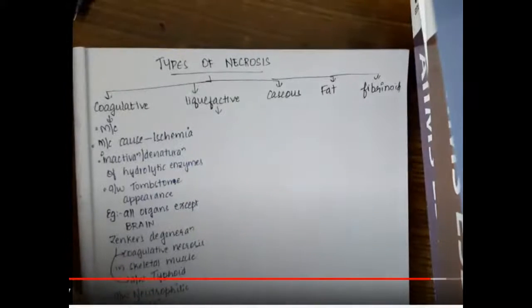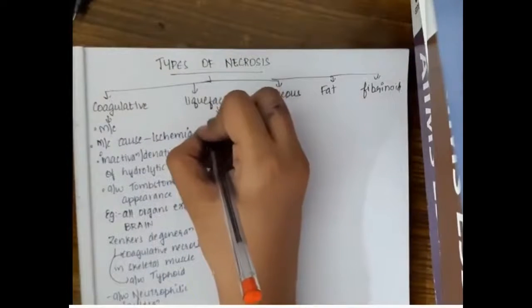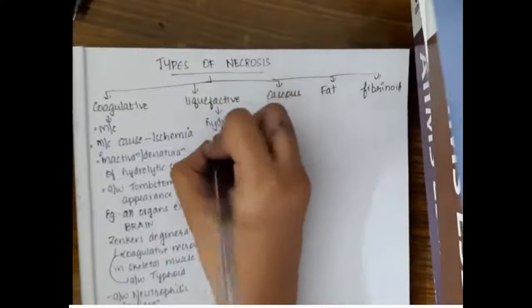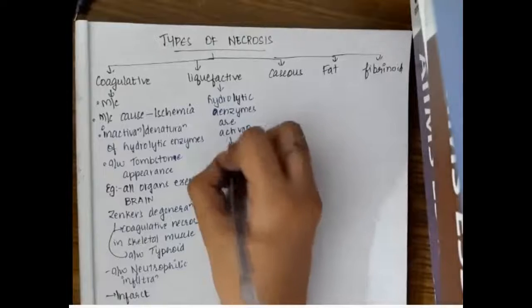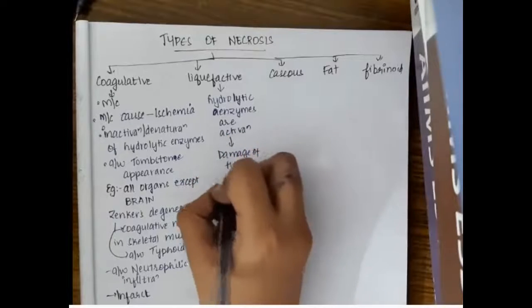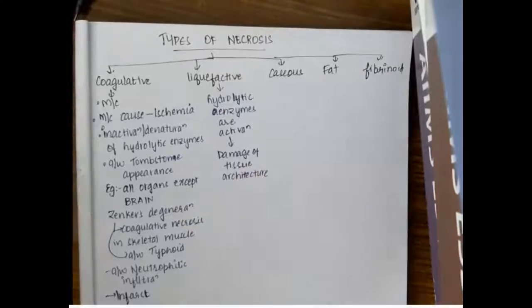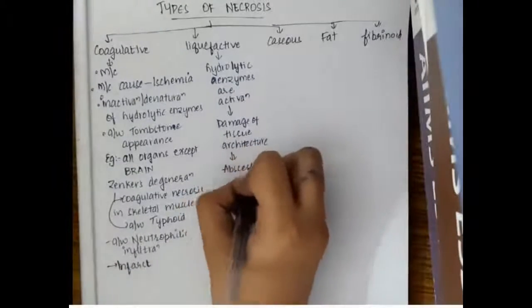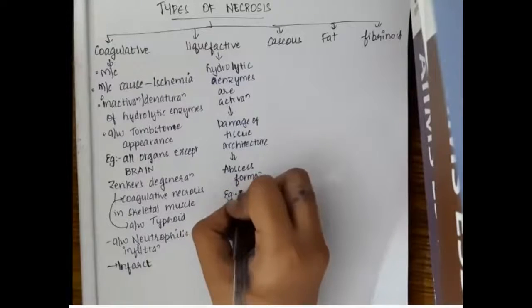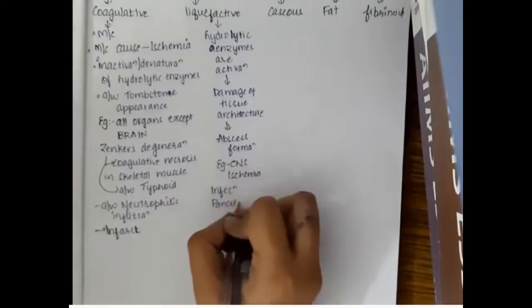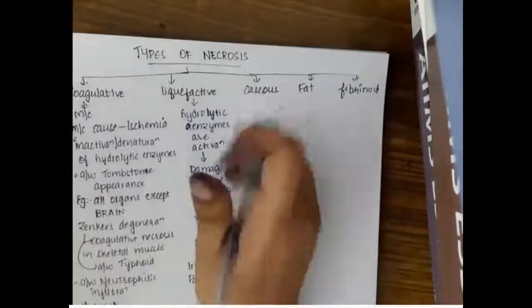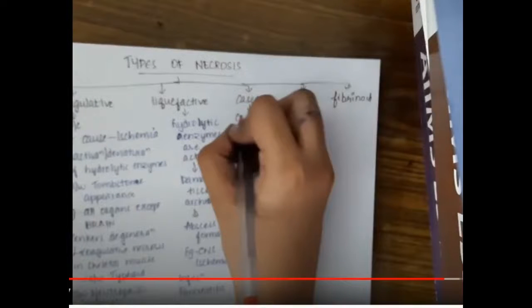The second type of necrosis is liquefactive necrosis. Liquefactive necrosis occurs with hydrolytic enzyme activation. Here there is activation of hydrolytic enzymes which will break down or damage the tissue architecture, resulting in liquefactive necrosis. Abscess formation occurs due to liquefactive necrosis. Examples include CNS ischemia and infections, especially the pus that occurs during infection in abscess formation.